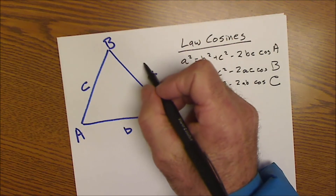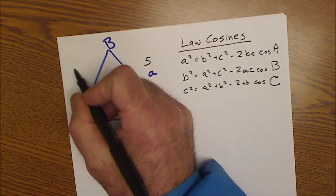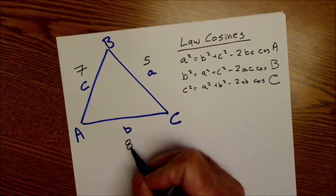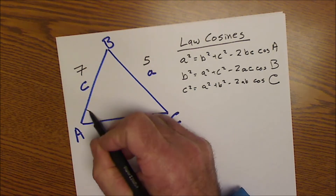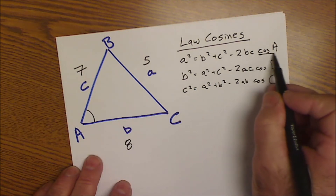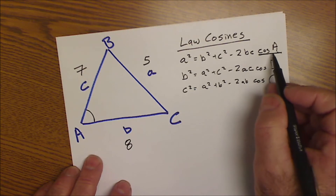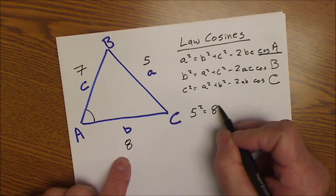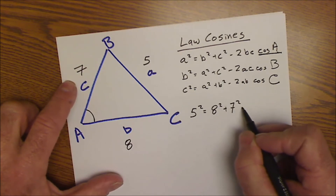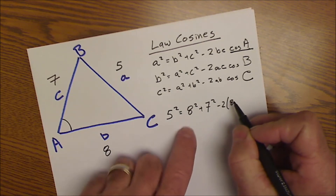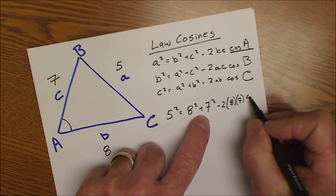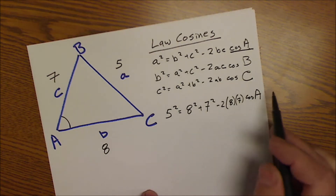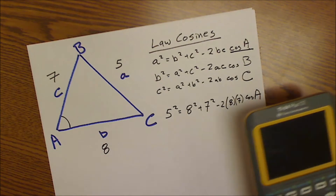Let's say side a = 5, side c = 7, and side b = 8. If I want to find angle A, I would use the first equation. I take a² = b² + c² − 2bc·cos(A), so: 5² = 8² + 7² − 2·8·7·cos(A). Here I have only one unknown in one equation, so I need to isolate A.